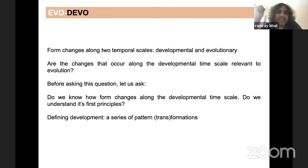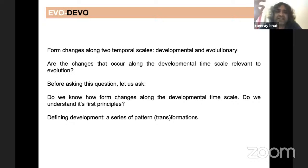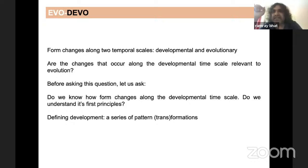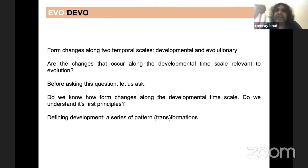Evo-devo begins by asking a tough, somewhat unresolved question: do the changes that occur on the developmental timescale within the life history of an organism influence in turn the dynamics of change on the evolutionary timescale? Does the development of an individual organism also influence how the population of those organisms evolves? Before asking such a difficult question, let us step back and ask a simpler one: do we really know how form changes along the developmental timescale?